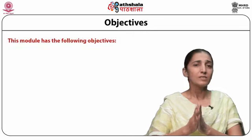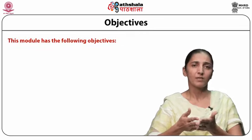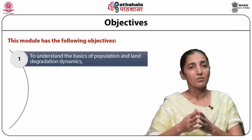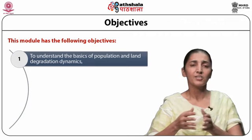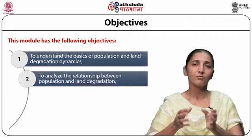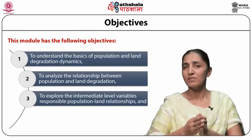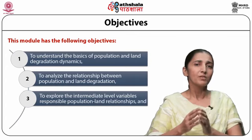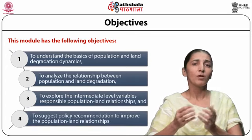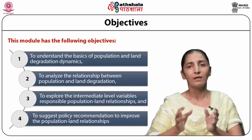All these issues affect land attributes due to demographic pressures in developing countries. The population pressure and rapid development aspects influence the demographic profile. This module has the following objectives: to understand the basics of population and land degradation dynamics, to analyze their relationship, to explore intermediate variables responsible for population-land relationships, and to suggest policy recommendations to improve population-land relationships.